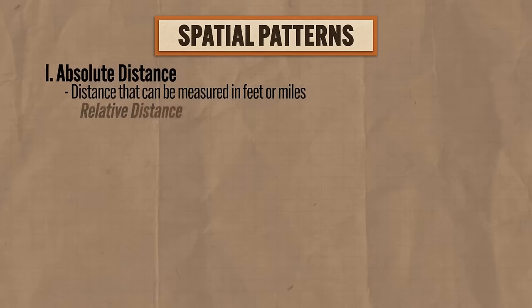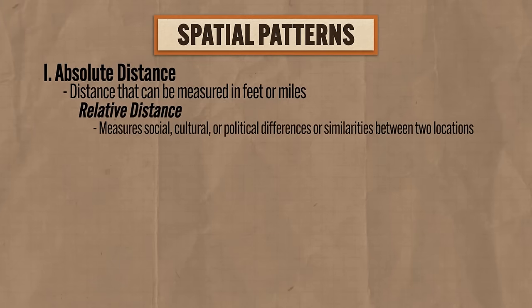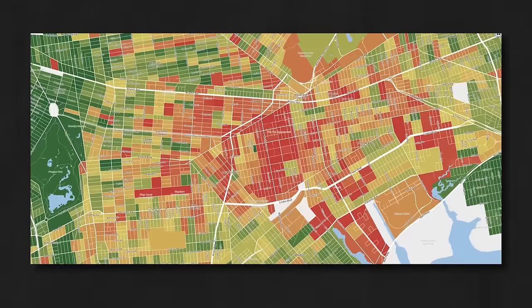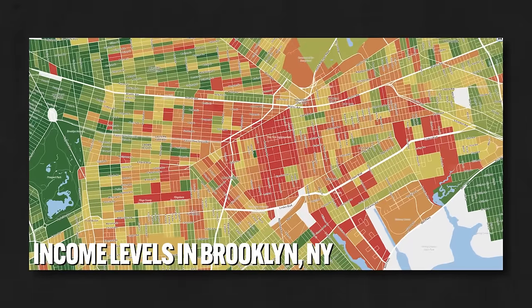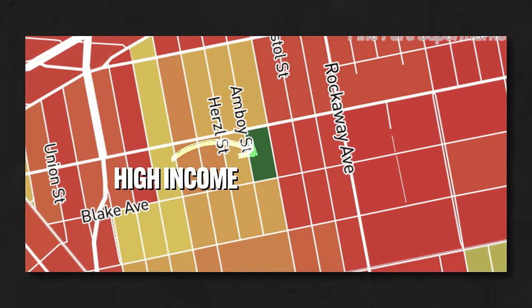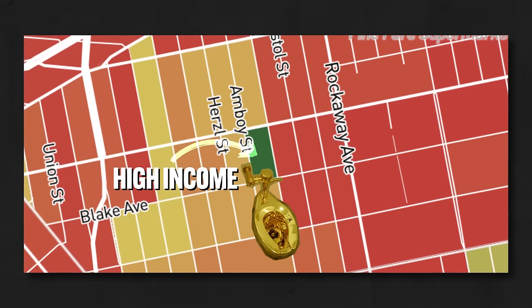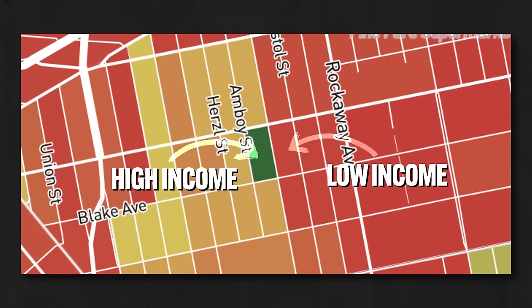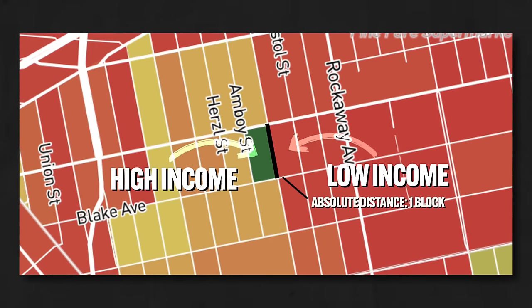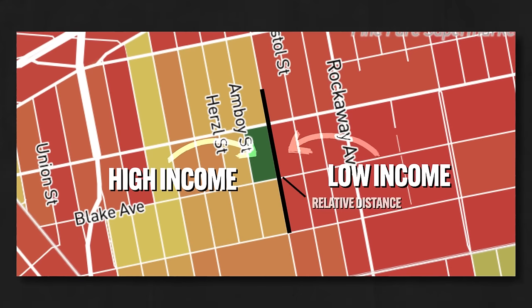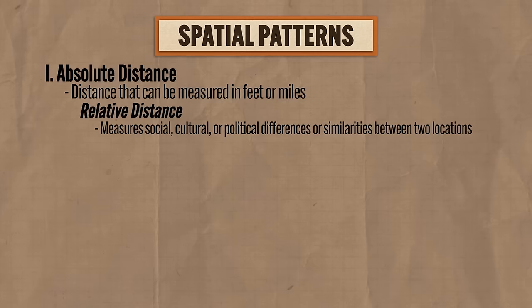However, there's a related concept that cannot be depicted on maps, namely relative distance, which measures social, cultural, or political differences or similarities between two locations. For example, this is a map showing the income levels across a neighborhood in Brooklyn, New York. People who live in the green square make a lot of money, but the people in the red square make very little. So these two areas are only a block apart in terms of absolute distance, but in terms of relative distance, they're much further apart in terms of the lifestyles people are living.